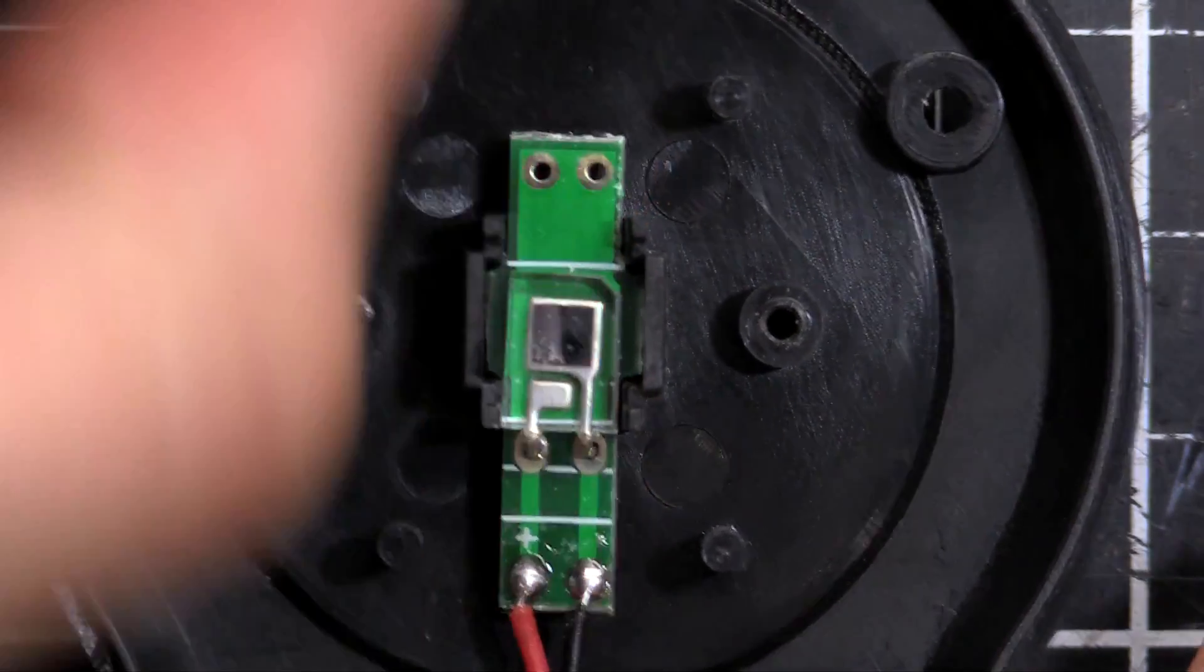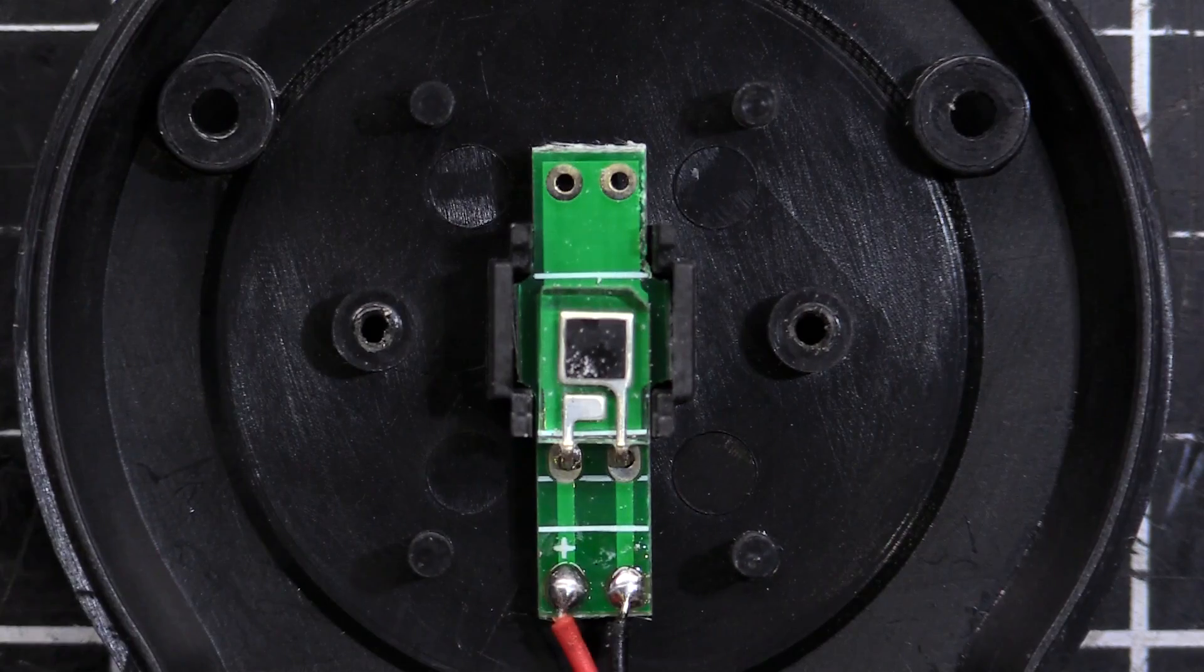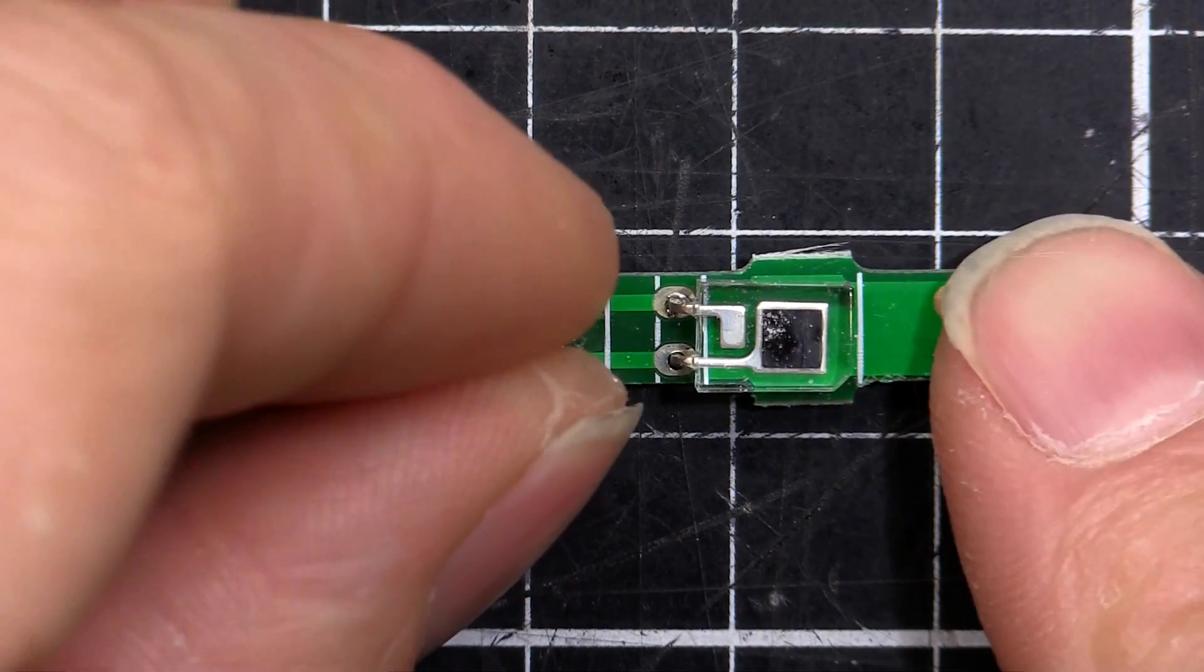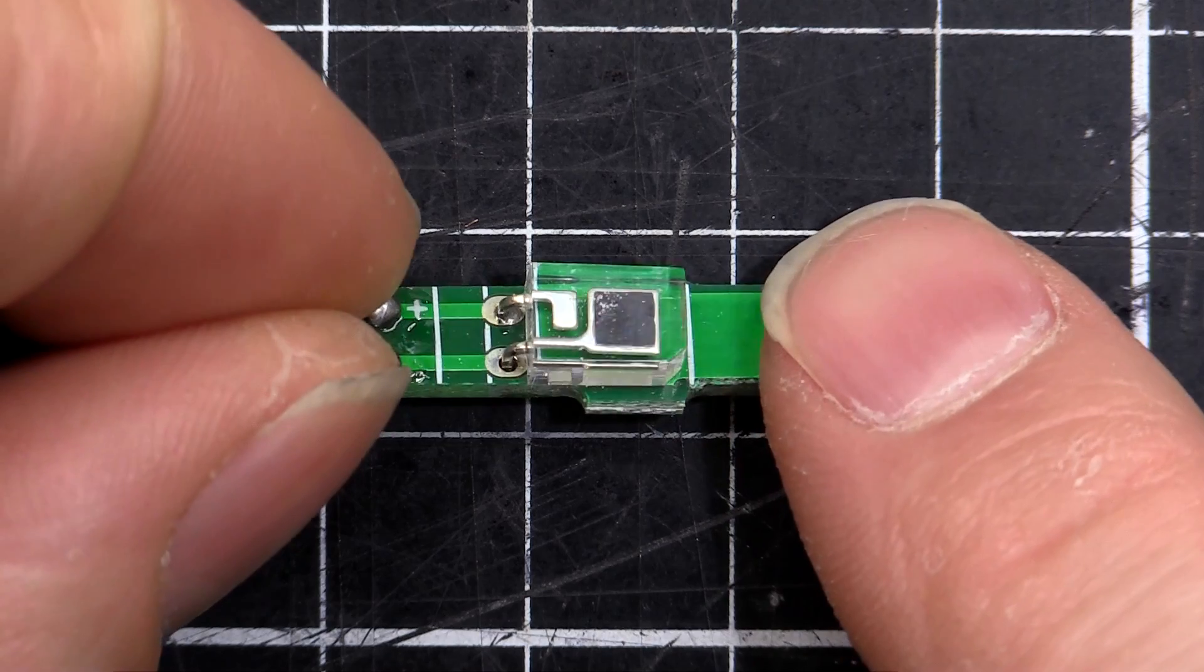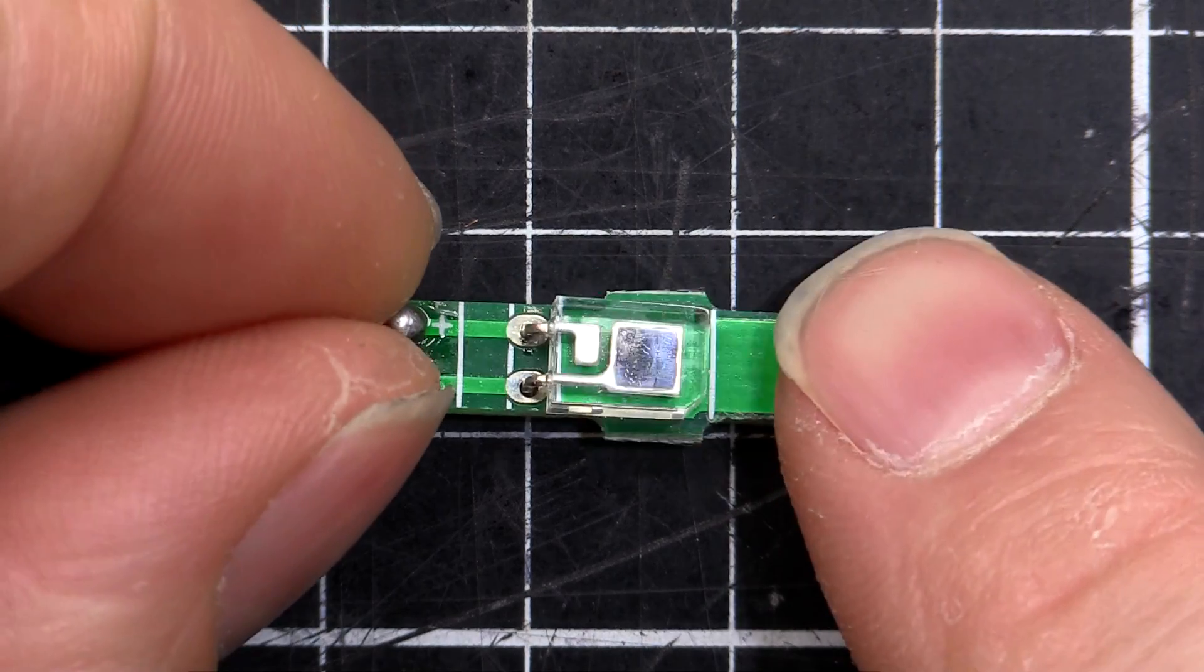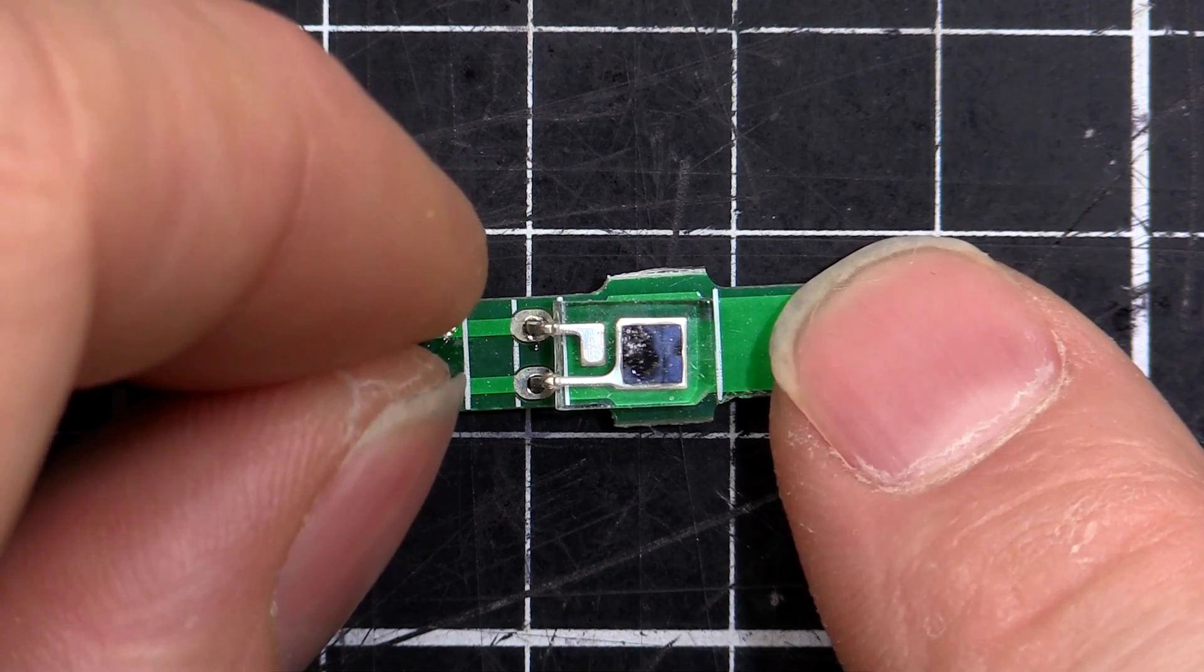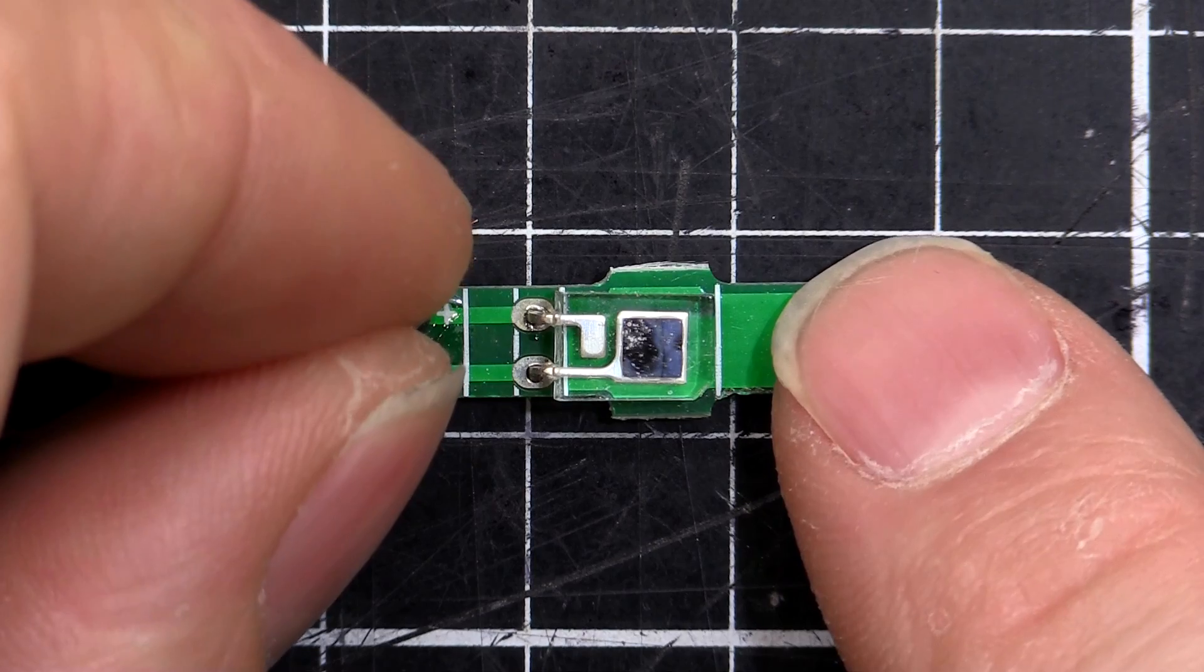Yep, there's a little glass window there. If I can get that to focus. Here's our tiny photo transistor, or the sensor anyway. Try and get that to focus. There we go. That's what's reading the light. It may even be a little solar panel or something. Might see if there's a voltage coming out of that or if it's a resistance or something. I'll get back to you in a sec.